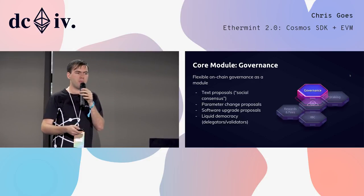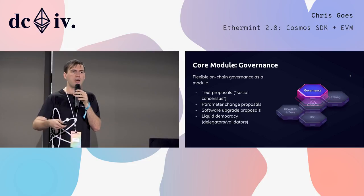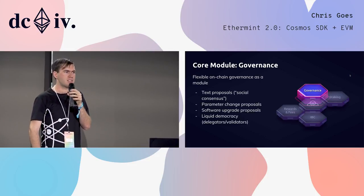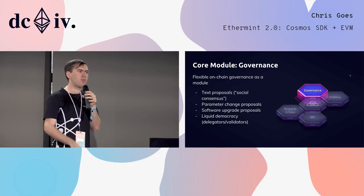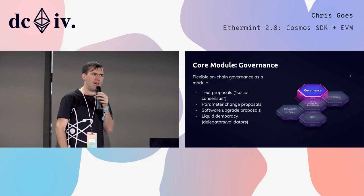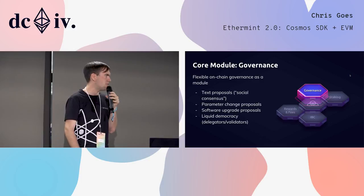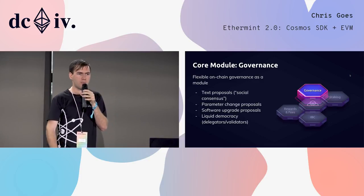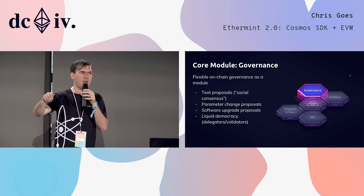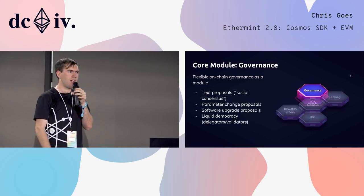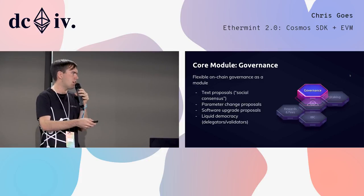The second are parameter change proposals, which are in-band. So if a parameter change proposal is passed, that might change the amount of stake which is slashed for double-signing, or it could change the annual network inflation rate. Third and finally, we have software upgrade proposals, which actually upgrade the state machine which the chain is running — so upgrade the logic of your application-specific blockchain, maybe the logic of an exchange.